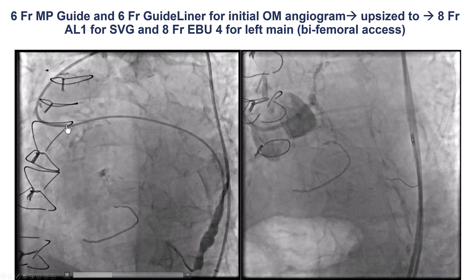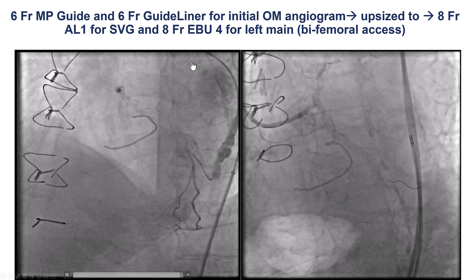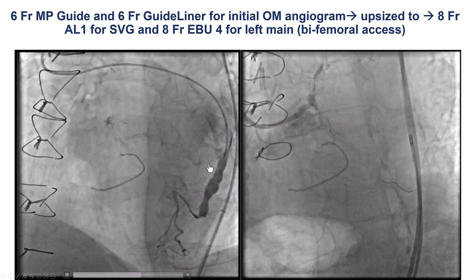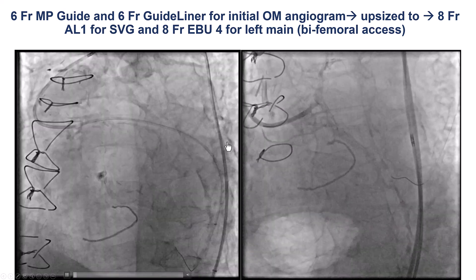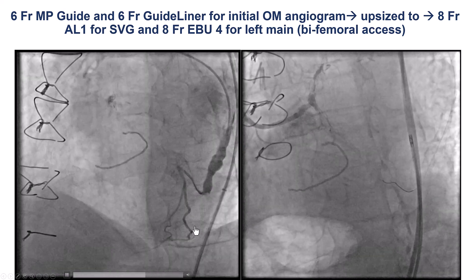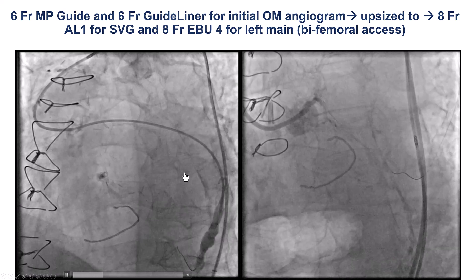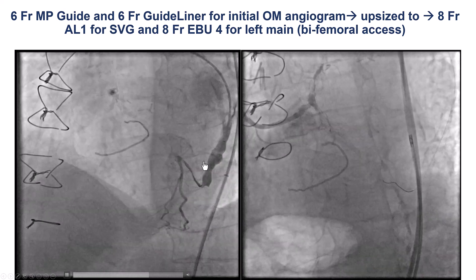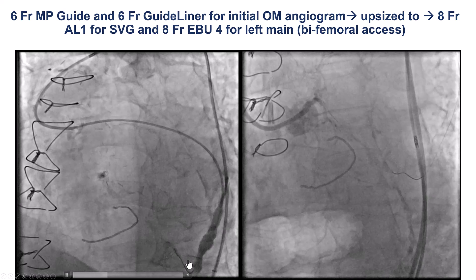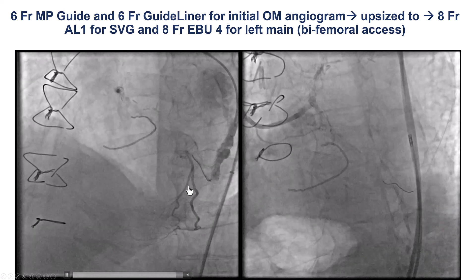We then engaged the saphenous vein graft to the obtuse marginal, and after inserting another guide extension, it became clear that this SVG was actually communicating with the obtuse marginal branch. So to be able to occlude the aneurysmal SVG, we would have to first re-canalize this native obtuse marginal branch.